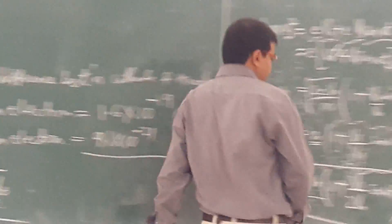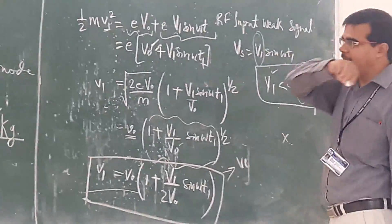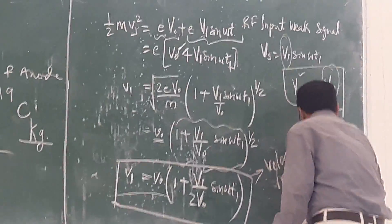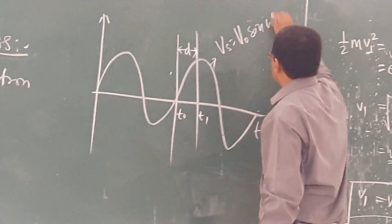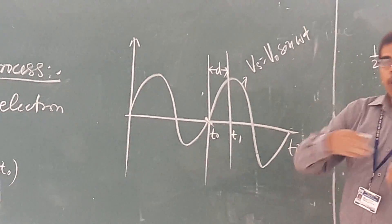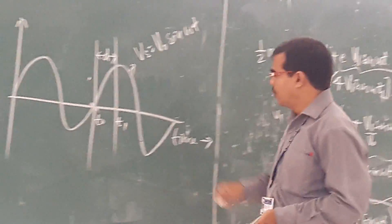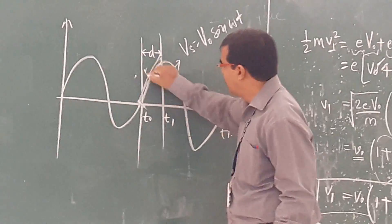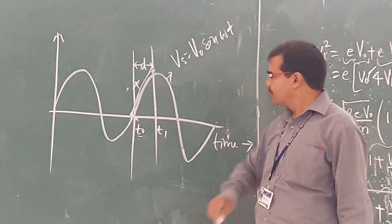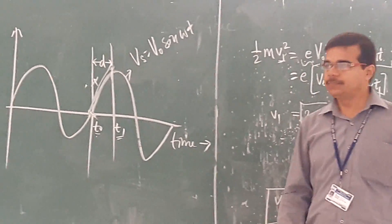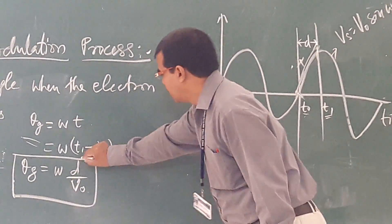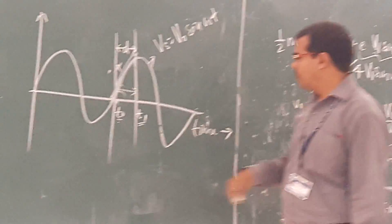This is the velocity modulation equation. Looking at the RF signal, we are seeing what will be the phase angle. When the signal is going from 0 to the positive peak, let us assume that at time T₀ the signal is at 0, and at time T₁ it reaches the positive peak. The phase angle is ωt, where t is the time duration given by T₀.